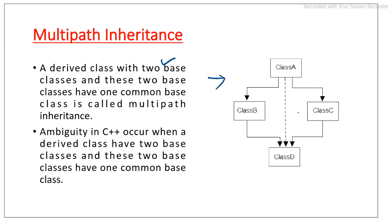In the diagram you can see there are two derived classes — class B and class C — both derived from class A, which is the common base class. From class B and class C, class D is then derived. So as per the definition, class D has two base classes — class B and class C — which are both derived from the common base class, class A.